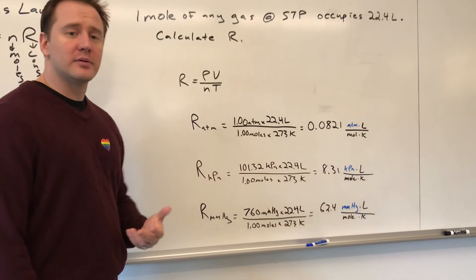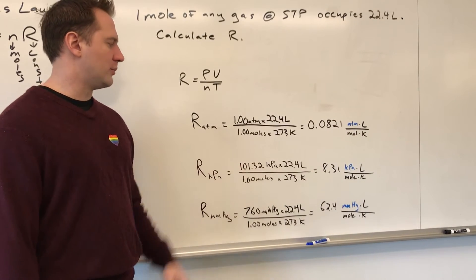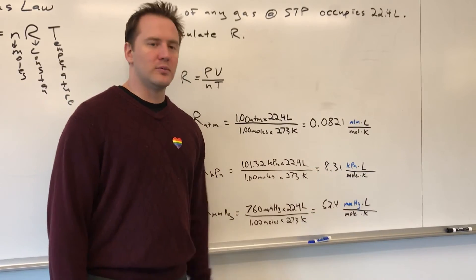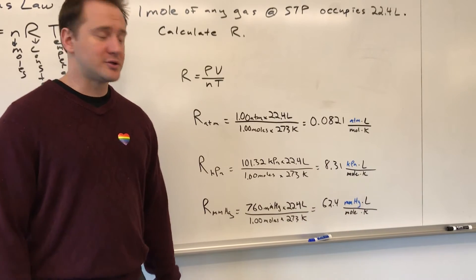If we were describing the R value in kilopascals, you plug in, you know, at STP, you'd have 101.32 kPa, R value would change to 8.31. And for millimeters of mercury, again, just plug in 760 millimeters of mercury for the pressure.